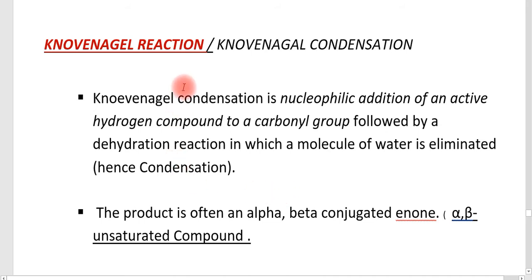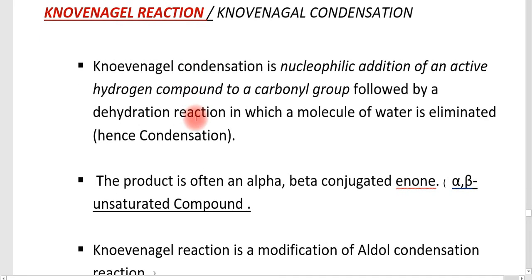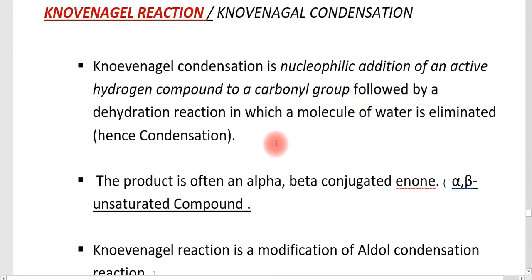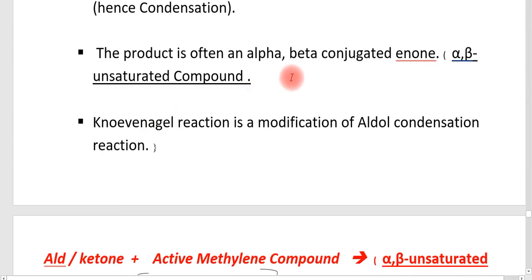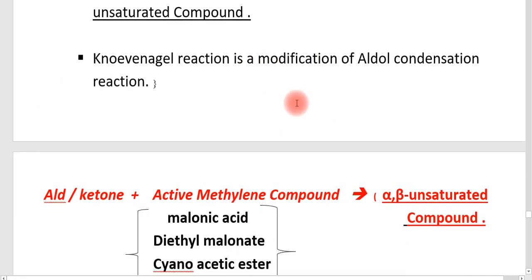The next is the Knoevenagel reaction, or Knoevenagel condensation. It is a modification of the aldol condensation reaction, involving the nucleophilic addition of an active hydrogen compound — that is, an active methylene compound acting as a nucleophile — to a carbonyl group, followed by dehydration in which a molecule of water is eliminated. The product is often an alpha-beta-conjugated enone, i.e., an alpha-beta-unsaturated compound. That is why the Knoevenagel reaction is considered a modification of the aldol reaction.